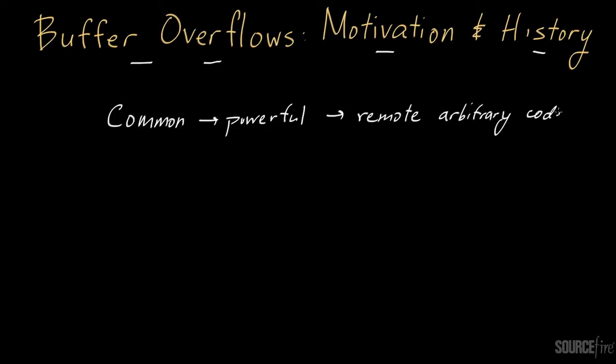Remote arbitrary code execution is where an attacker is given essentially free reign — carte blanche access to the system — and is allowed to effectively execute any possible set of instructions of their volition. This doesn't always apply to every buffer overflow, but a lot of buffer overflows can lead to this type of remote arbitrary code execution. At that point, the attacker can really just wreak havoc in any manner that they wish on that particular system.